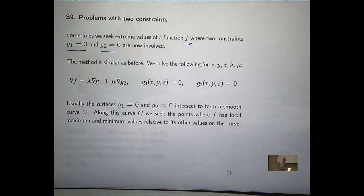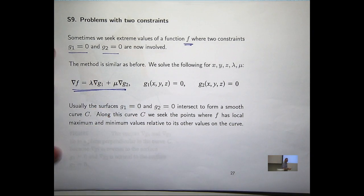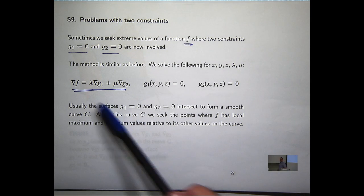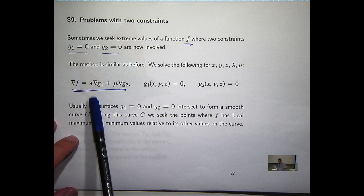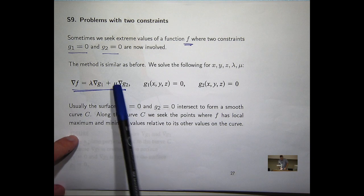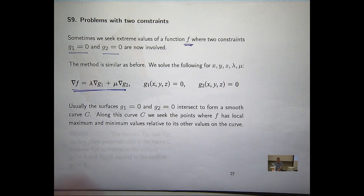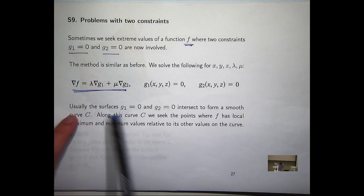So the method is very similar as before, but you can see the Lagrangian now has an extra term on the right-hand side. So lambda here is one Lagrange multiplier associated with the g1 function, or the grad g1 function. And this mu is a second Lagrange multiplier associated with this expression. Usually in these problems, the two surfaces associated with these equations intersect, and they form some sort of smooth curve.